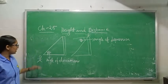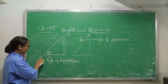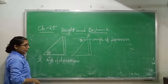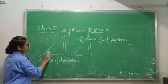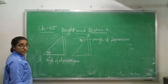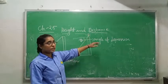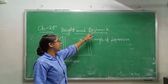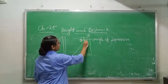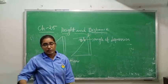If a man is standing here and looking up, this angle will be known as the angle of elevation. But if a man is standing here and looking down, then this angle is known as the angle of depression.